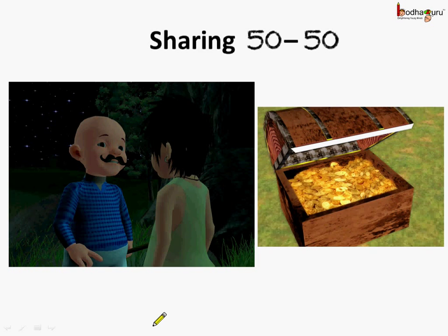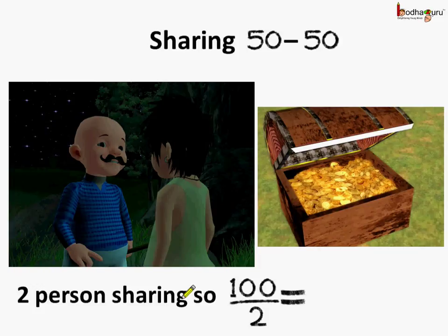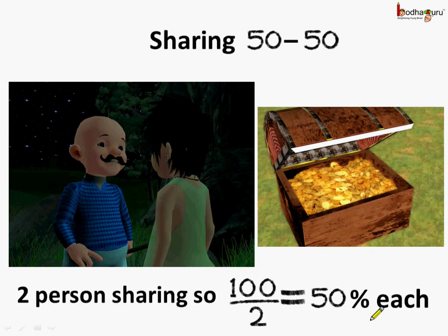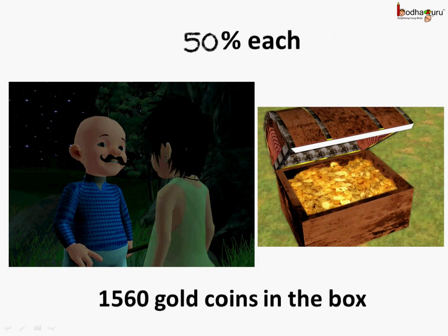As we saw in the story, Sampath and Hira decided to share the treasure 50-50. What does it mean? It means if the whole treasure is 100%, then 2 people are sharing. So it would be 100 by 2, which is equal to 50%. So each of these two, Sampath and Hira, will get 50% each.